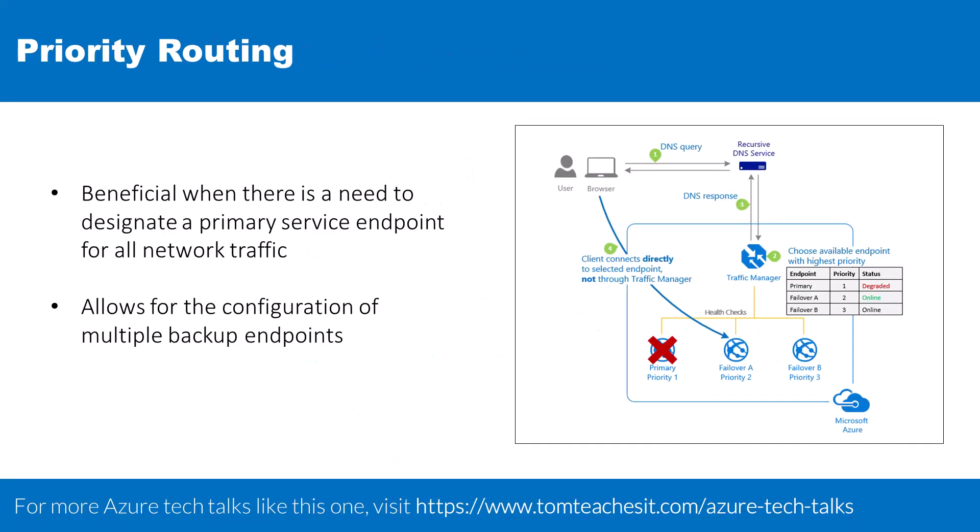First, we have the priority routing method. This approach is really beneficial when there is a need to designate a primary service endpoint for all network traffic, ensuring a seamless user experience. In addition to the primary endpoint, it allows for the configuration of multiple backup endpoints.